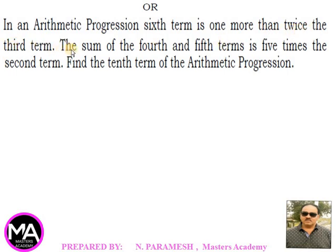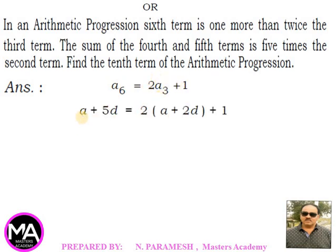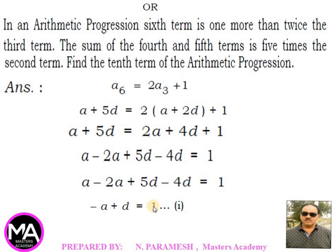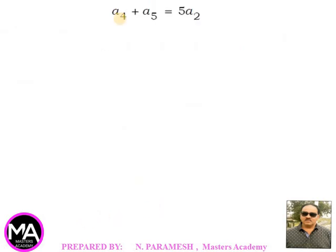Alternatively: In an arithmetic progression, the sixth term is one more than twice the third term; the sum of the fourth and fifth terms is five times the second term. Find the tenth term. First condition: a6 = 2a3 + 1, so a + 5d = 2(a + 2d) + 1. Simplifying: -a + d = 1 — call this equation 1.